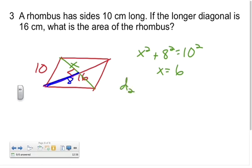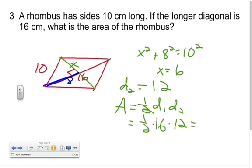Which means I now have everything I need in order to find its area. I have one-half times sixteen times twelve, and that's ninety-six square centimeters.